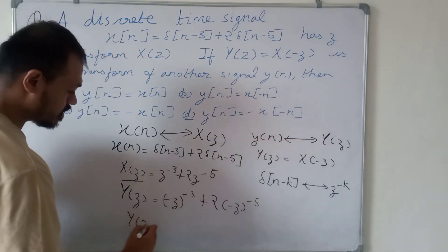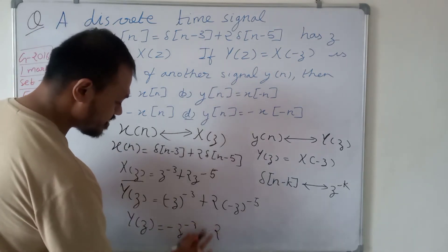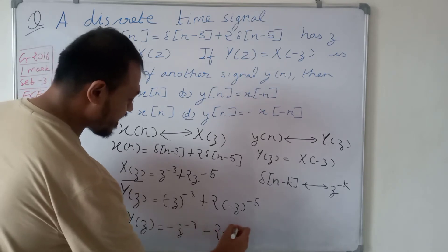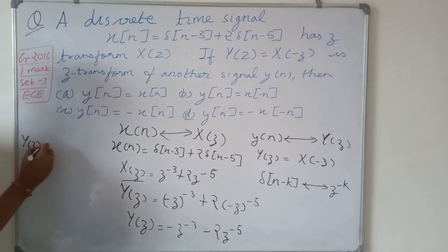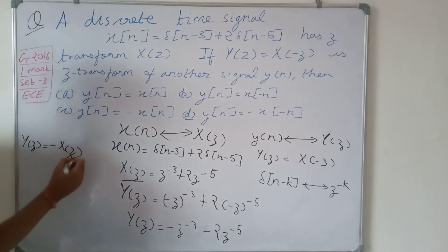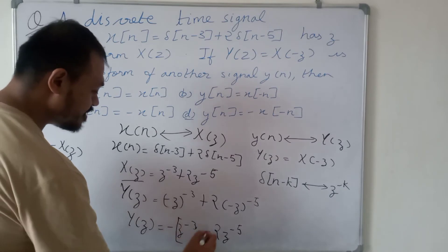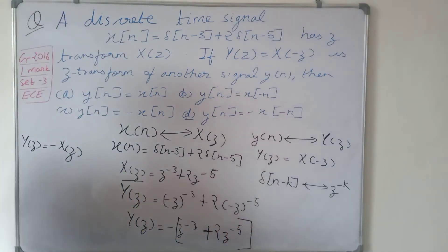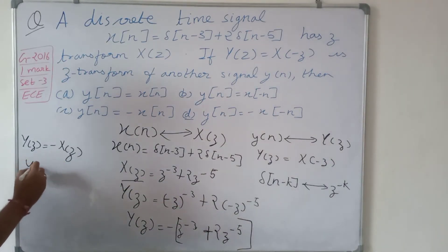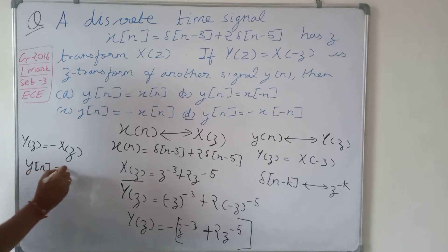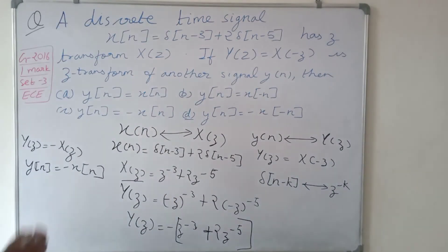Substituting z with minus z gives: minus z to the power minus 3 plus 2 times minus z to the power minus 5. So Y of z equals minus z to the power minus 3 plus 2 z to the power minus 5. Taking minus common outside, this equals minus X of z. Therefore y of n equals minus x of n, so the correct option is option C.